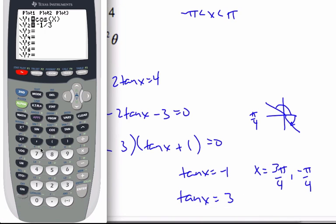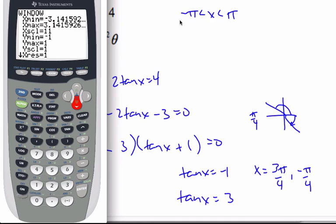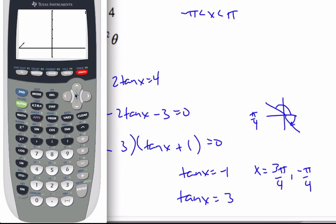We'll change this to tangent, we'll change this to 3. Make sure we change our window. I'm going to go from negative pi to pi since that's my interval for x, and we'll make this go up to 4 so I can see it. We'll graph it.